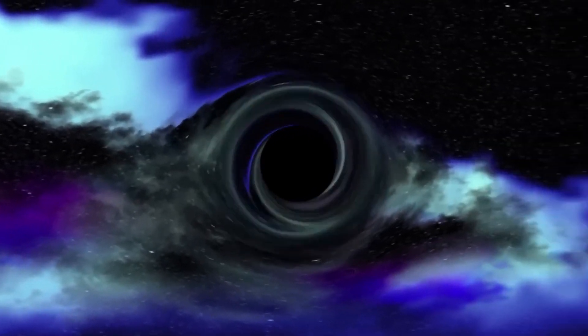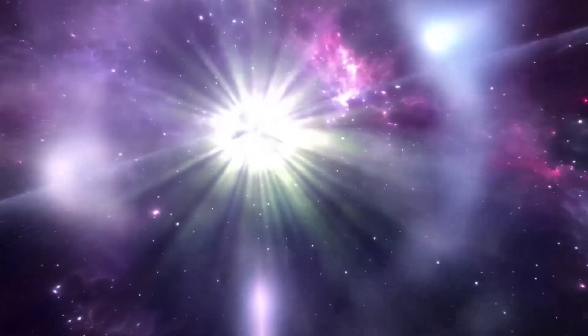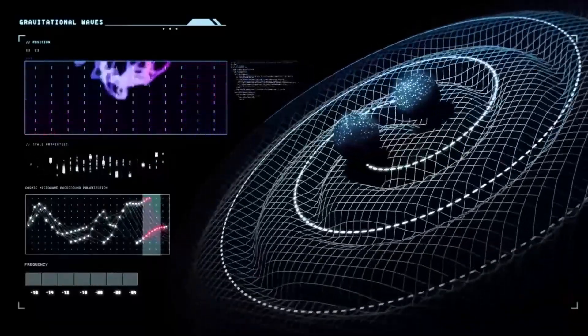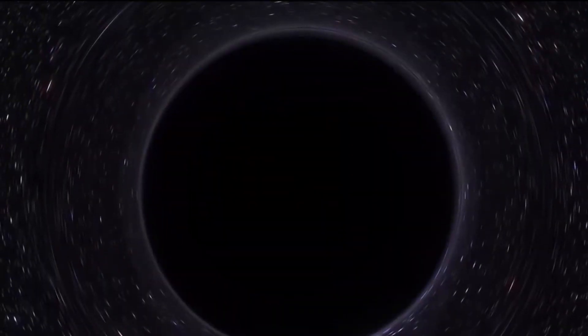What they found was astonishing – a bright, compact region of X-ray emission, known as the corona, hovering above the accretion disk. The corona had been predicted by theoretical models of black holes, but until now, had never been directly observed.